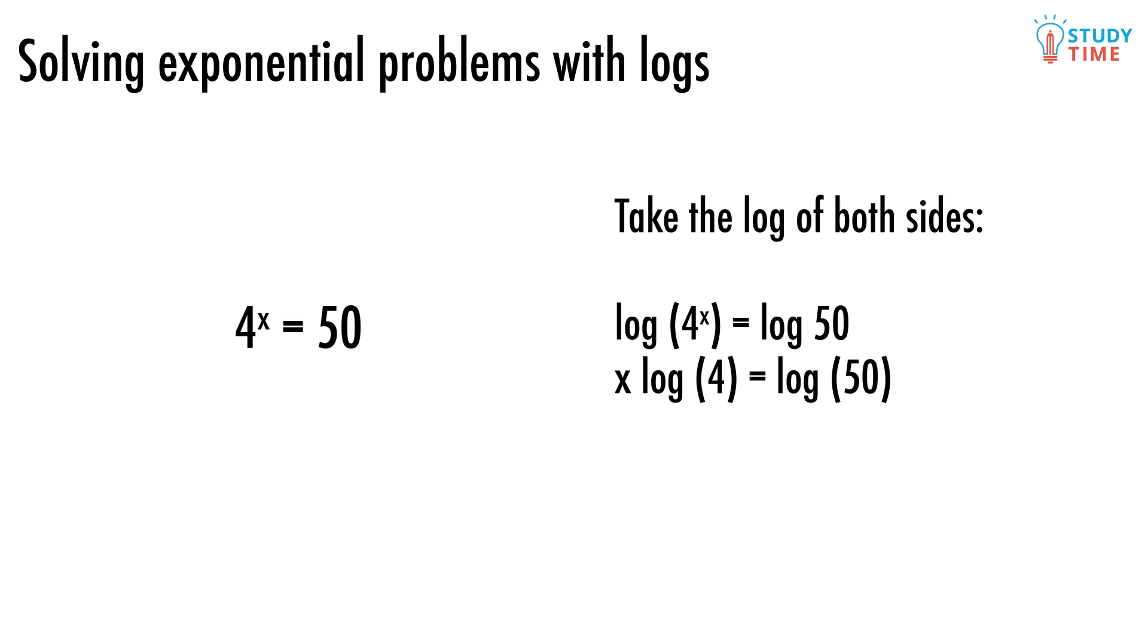Since log of 4 and log of 50 are just ordinary numbers that your calculator is more than powerful enough to cope with, we can solve the problem by dividing both sides by log 4. x equals log of 50 divided by the log of 4. Put the thing on the right side into your calculator and she'll spit this out: x equals 2.82. Which is the answer.